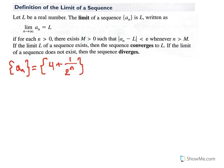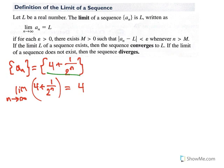For the example from the activity, the limit of a-sub-n as n approaches infinity is equal to 4. I can make the terms of this sequence as close as I want to 4 — epsilon tells how close — by choosing a term number large enough. For example, if I want a term within 1/10 of 4, my term number must be at least 4. Any term after the fourth will be closer to 4 than 1/10. No matter how small epsilon is, I can always find such a term number. That's what it means for the sequence to converge.